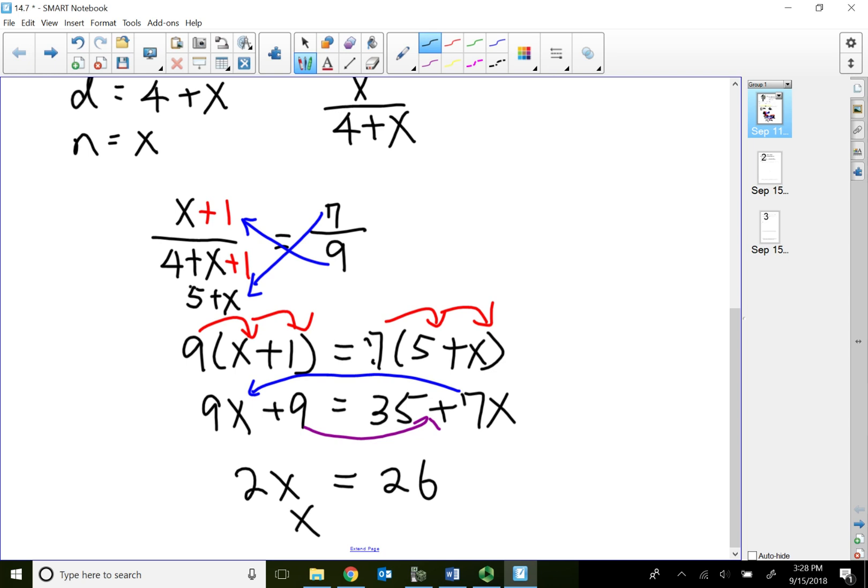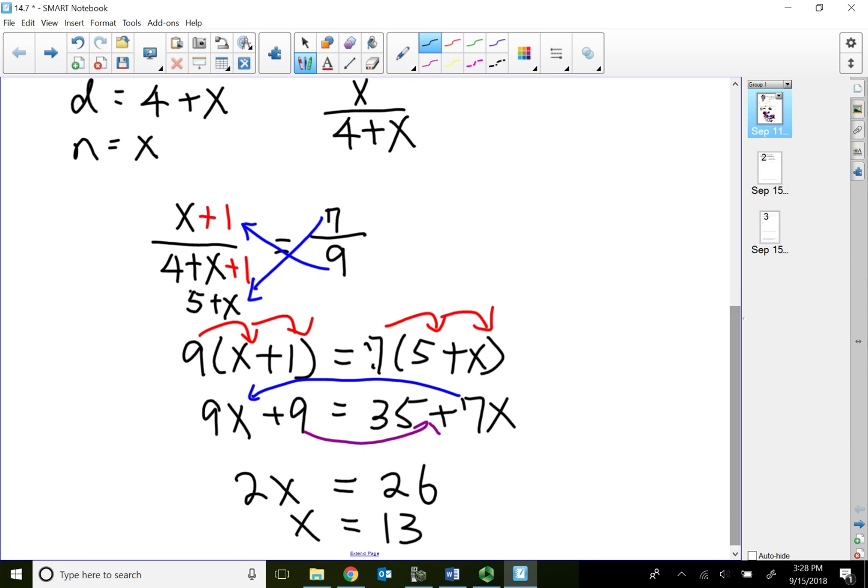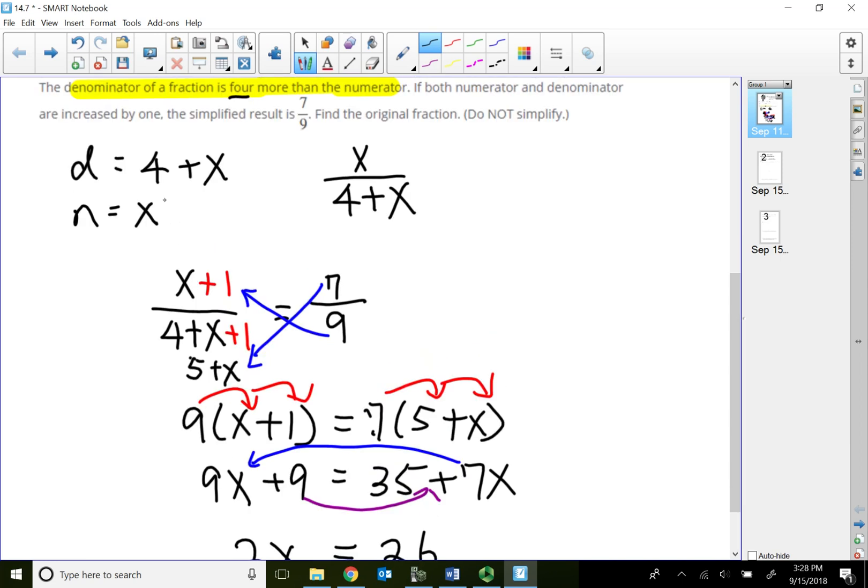That gives me 26. Divide both sides by two, my answer x equals to 13. So what is my original fraction? Since x is 13, that means my numerator is 13. The denominator is four more than that, so that would make it four plus 13, which is 17. So the original fraction got to be 13 over 17.